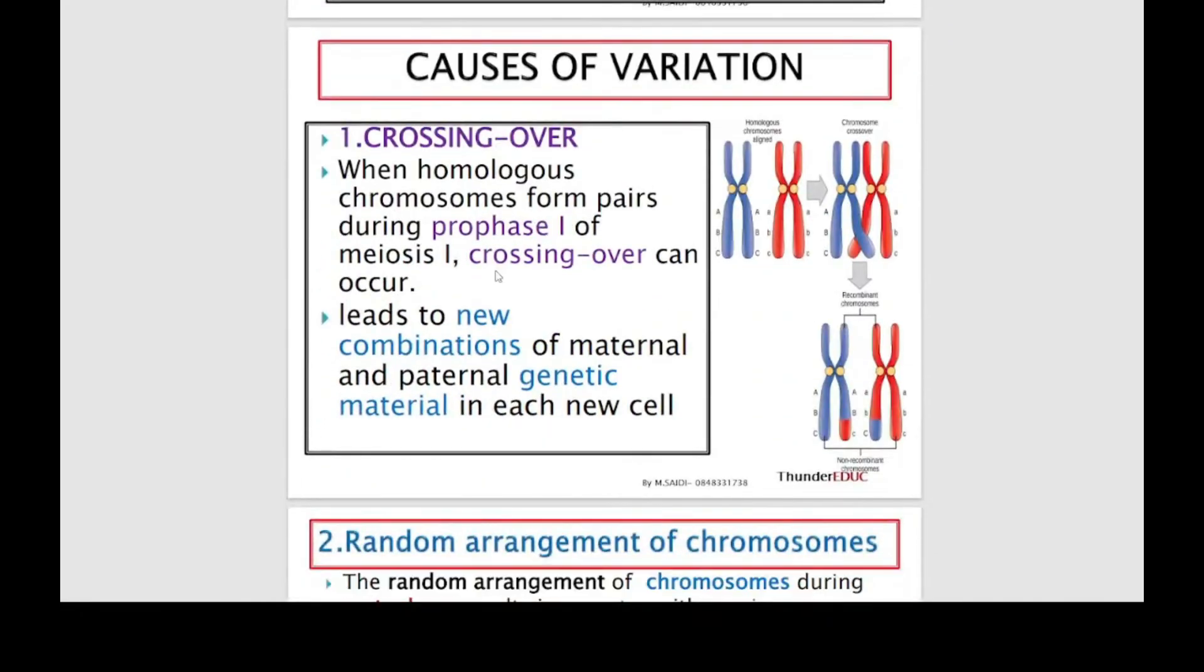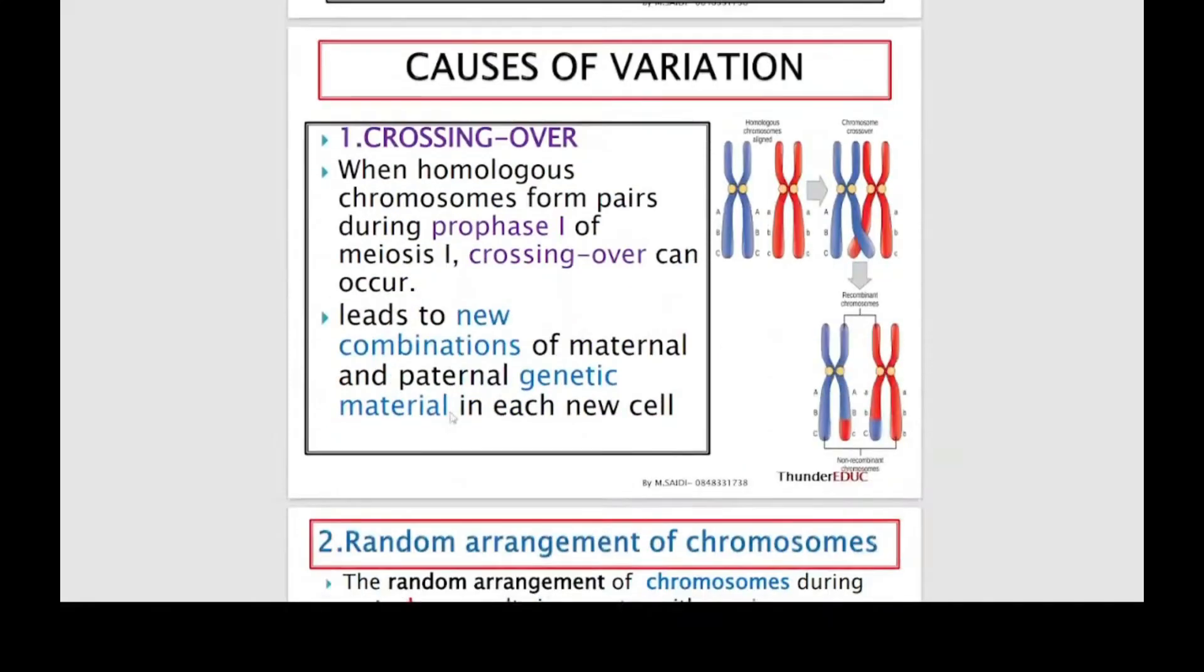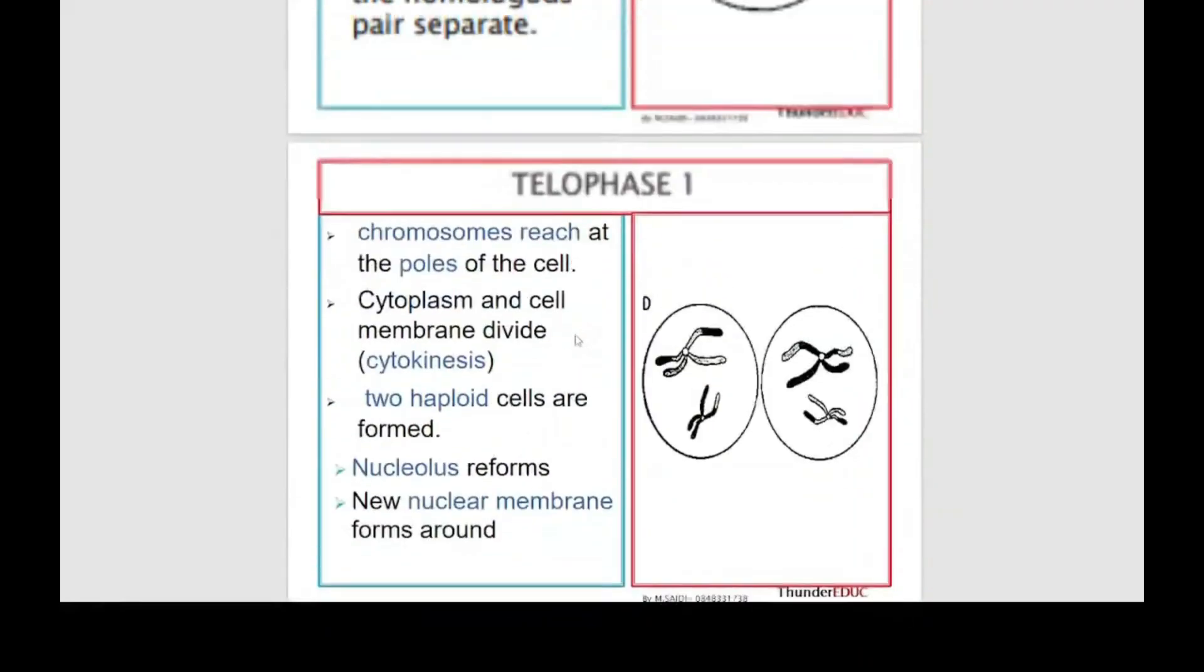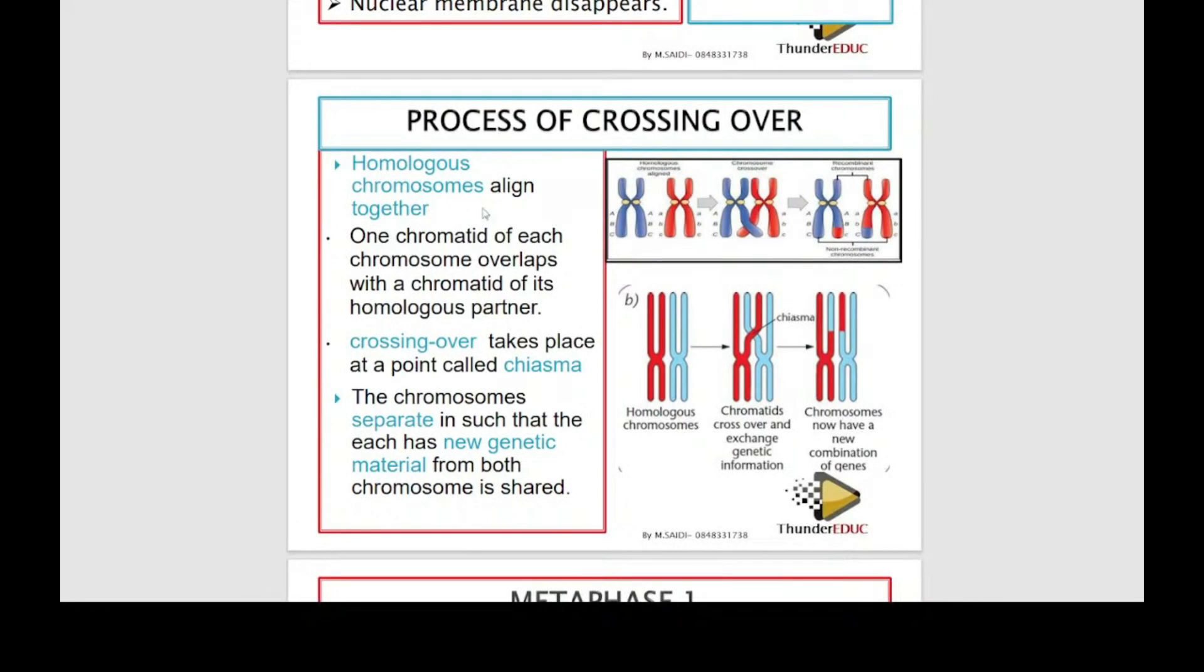Process of crossing over. I said it here and I said it here also, the real phase of crossing over. This homologous chromosome line up together, one chromatid of each chromosome overlap with the chromatids of this homologous pattern, and then the crossing over takes place at a point called, whatever you see, this is a marking point.